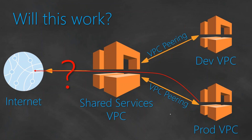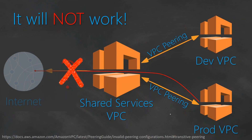Welcome back folks. In the previous video we were wondering whether we can connect our production instances to the internet through a shared services VPC. The question was whether we can send traffic all the way from production through shared services to the internet. The answer is no, it will not work. Amazon calls this edge-to-edge routing — you are using shared services as a kind of edge router. Whether it is for production or dev, you cannot use shared services to send your traffic to the internet.